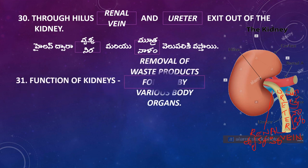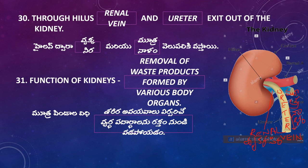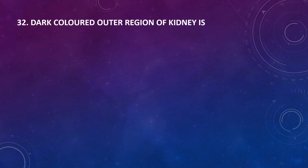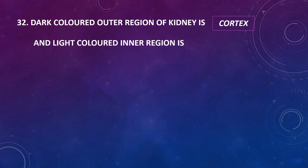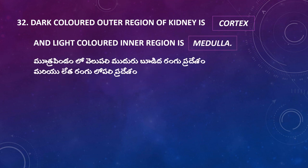The function of kidneys is the removal of waste products formed by various body organs from the blood. The dark-colored outer region of the kidney is the cortex, and the light-colored inner region is the medulla.